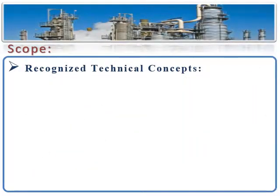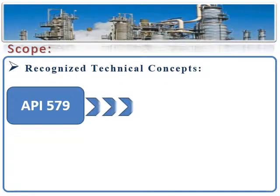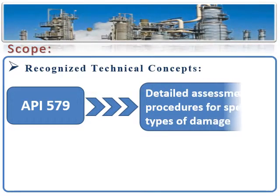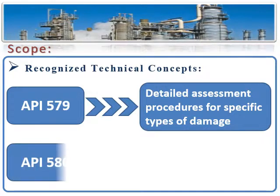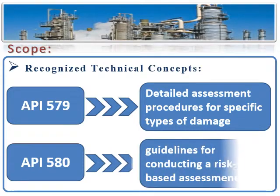This inspection code recognizes fitness-for-service concepts for evaluating in-service damage of pressure-containing components. API 579 provides detailed assessment procedures for specific types of damage that are referenced in this code. Also, this inspection code recognizes risk-based inspection (RBI) concepts for determining inspection intervals, and API 580 provides guidelines for conducting a risk-based assessment.